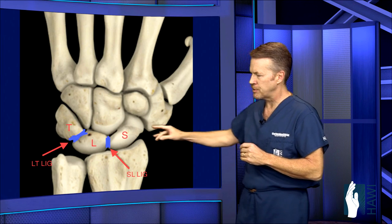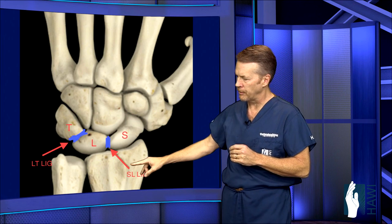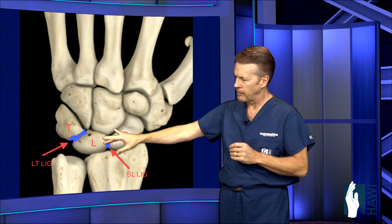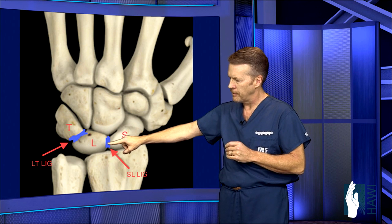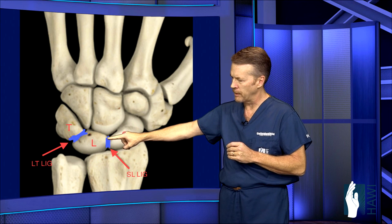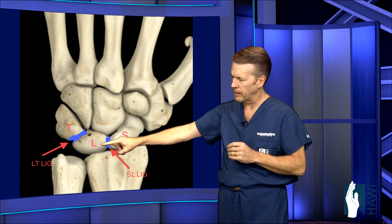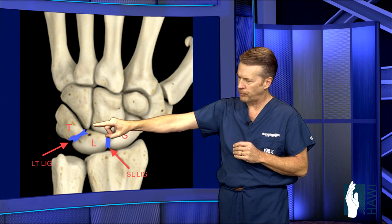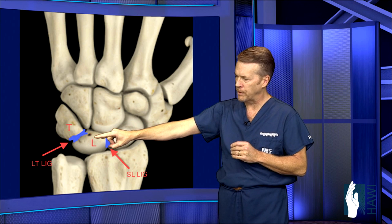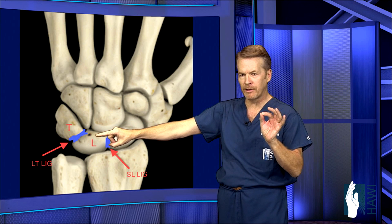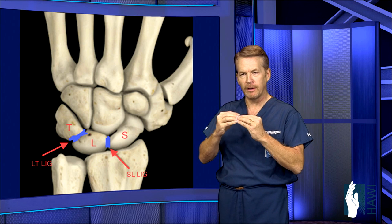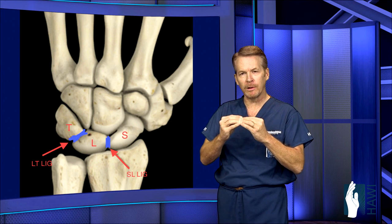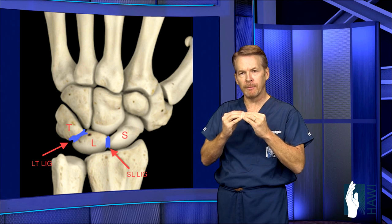Now let's look at the anatomy of the wrist. This shows the carpal bones right here, the forearm bone — the radius — and the ulna over to the left-hand side. You can see the scaphoid bone here, this blue ligament called the scapholunate ligament between the lunate and the scaphoid, and over between the lunate and the triquetrum is a lunotriquetral ligament. These are one-millimeter-thick ligaments that tether these three bones together — very important structures, but the most frequently torn ligaments in the wrist.